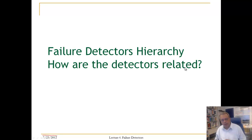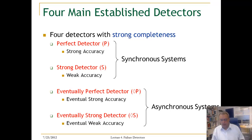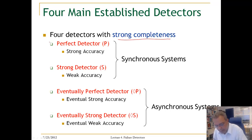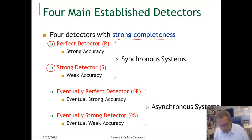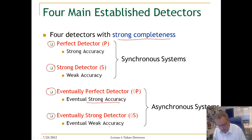Now that we know what the reducibility relation is, we can discuss how the different failure detectors are related. We have four failure detectors with strong completeness. We have the perfect detector with strong accuracy — if you detect a process, it has crashed. And we have strong detector S, which says that one correct process can never be suspected. Then we have two eventual variants: the eventually perfect detector with eventually strong accuracy, and the eventually strong detector with eventually weak accuracy.